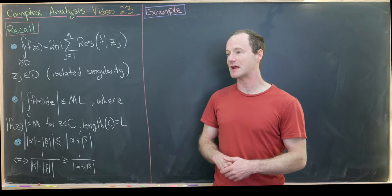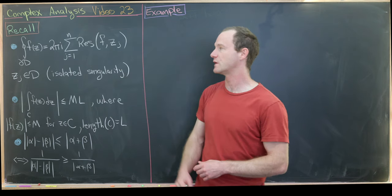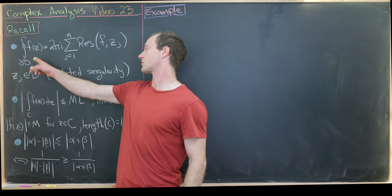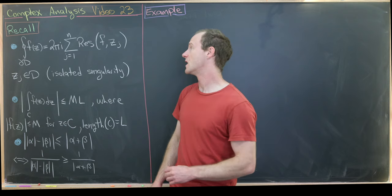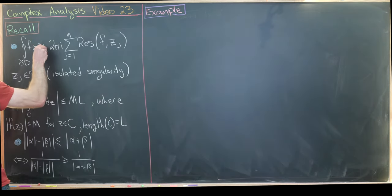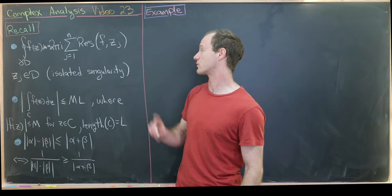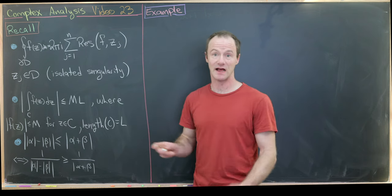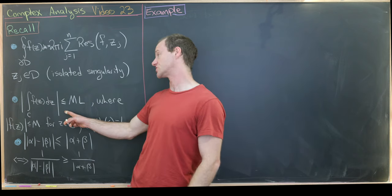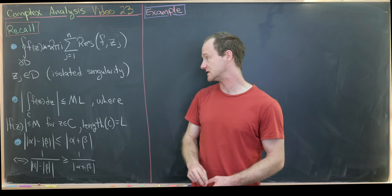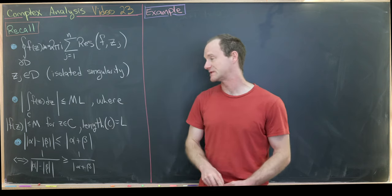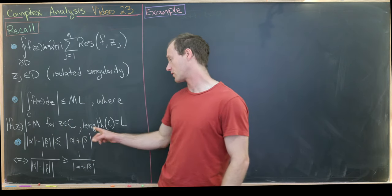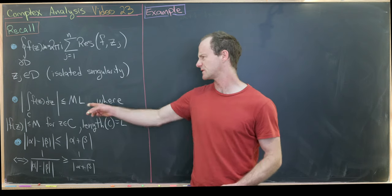We're going to use three main tools. The first is the Cauchy residue formula from the previous video: the integral over the boundary of a region D of a function f(z) dz equals 2πi times the sum of all residues within region D. The second result is the ML estimate, which says the modulus of the integral over a curve C of f(z) dz is less than or equal to M times L, where M is an upper bound for the modulus of f on the curve and L is the length of the curve.